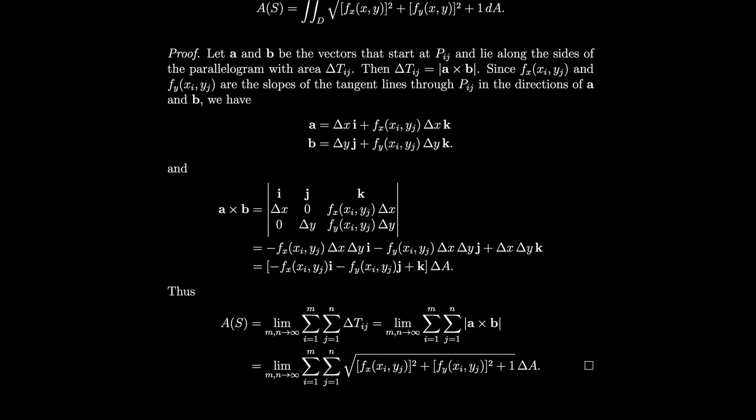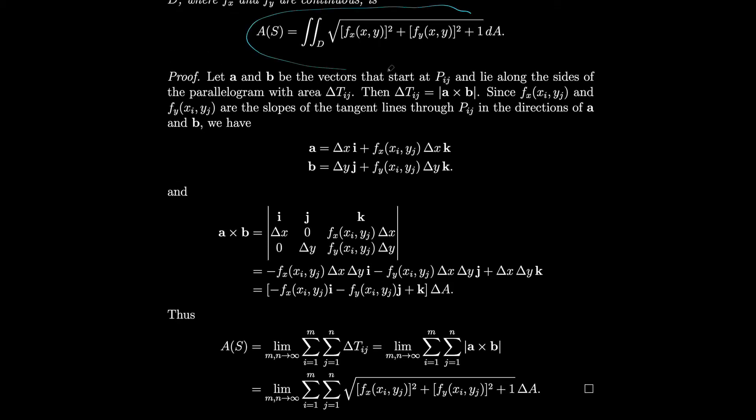So then when we take the limit of this double Riemann sum, it becomes the integral. So we get the exact formula that we wanted. Notice how similar this is to our formula for the area of a surface of revolution. But notice this one doesn't require any revolution. We can just take the surface area now of any surface using a double integral.